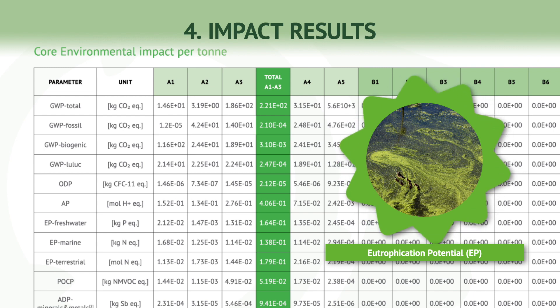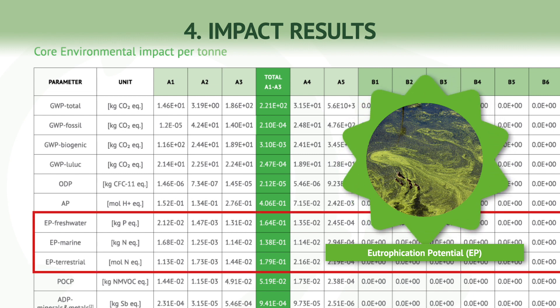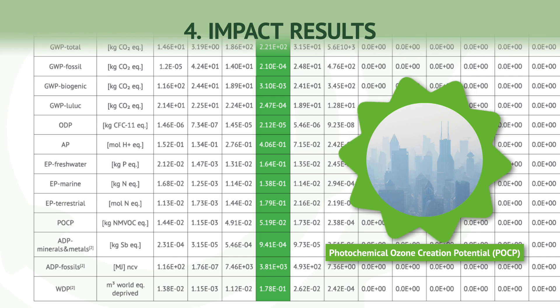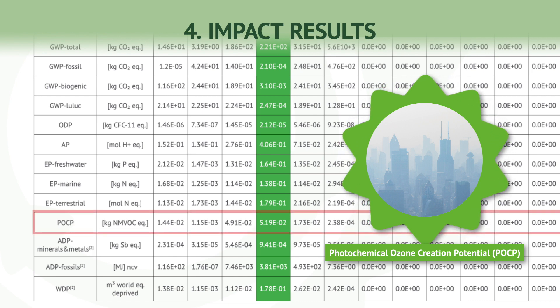The fourth indicator is Eutrophication Potential, or EP. Eutrophication refers to the excessive growth of algae caused by increased concentrations of nitrates and phosphates in water. This can lead to oxygen depletion, ecosystem damage, and increased mortality of aquatic fauna and flora. The fifth indicator is Photochemical Ozone Creation Potential, or POCP. This indicator assesses the potential for the creation of ozone and other air pollutants in the presence of nitrogen oxides (NOx) and Volatile Organic Compounds (VOCs). High levels of POCP-contributing gases can contribute to smog and negative impacts on human health, such as increased asthma incidents.